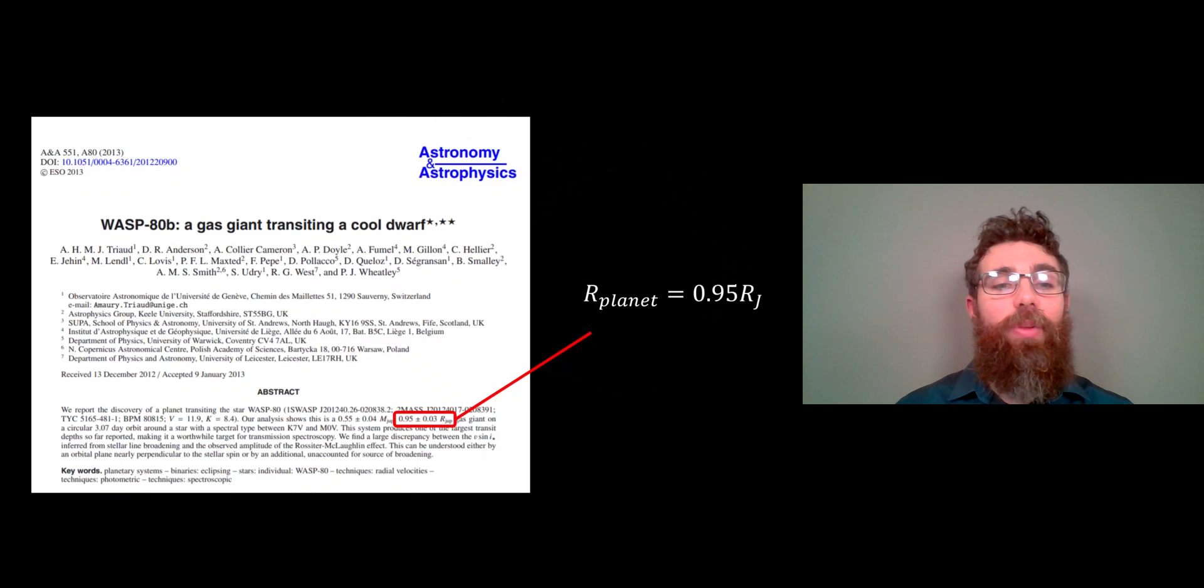We can then check that with the published scientific paper. In the abstract right at the top, you have 0.95 for the radius of WASP-8Tb, which is quite close to what we did just by looking at the plot and putting it into that equation there.